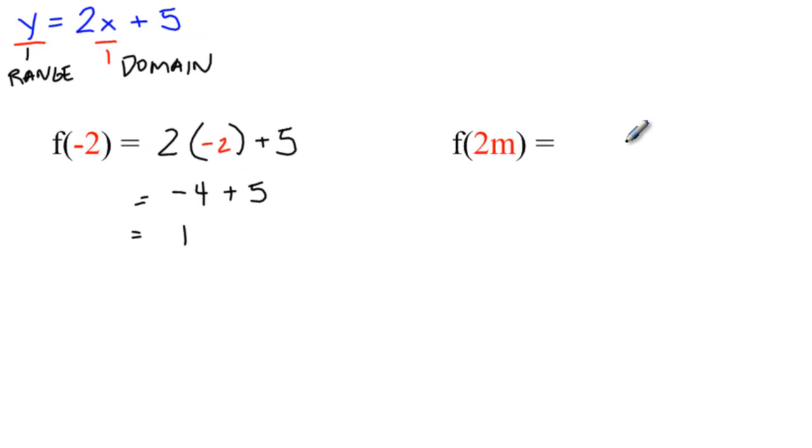The last example looks a little different because this time there is a variable and a coefficient in front of it, 2m. You're still doing the same thing. Instead of x, we're just going to rewrite the equation, and we're going to replace that x with a 2m. Simplify it from here. 2 times 2m is just 4m plus 5.